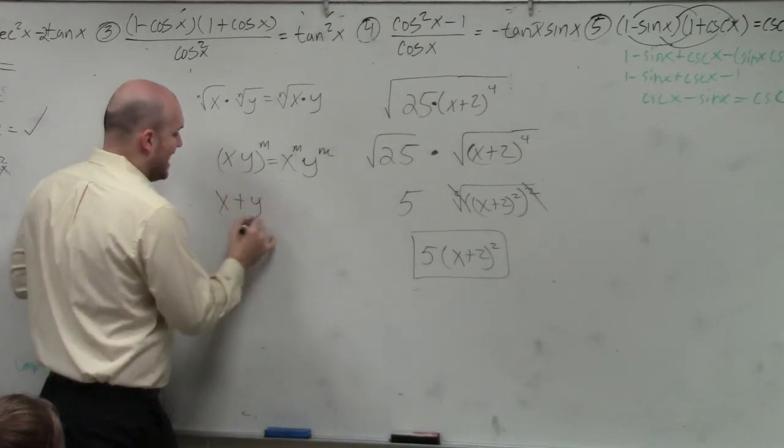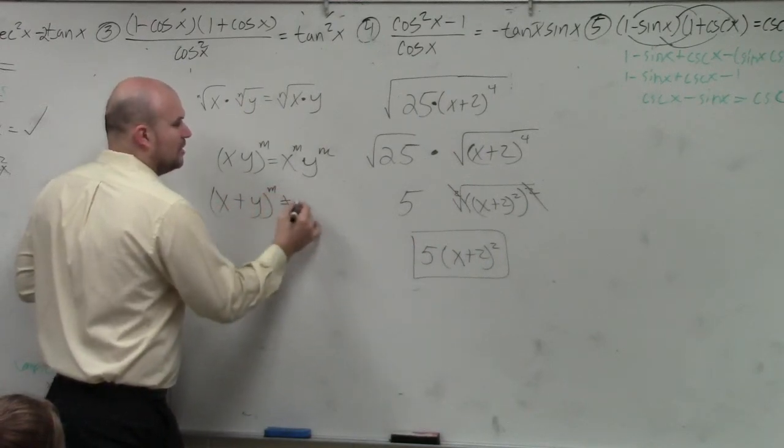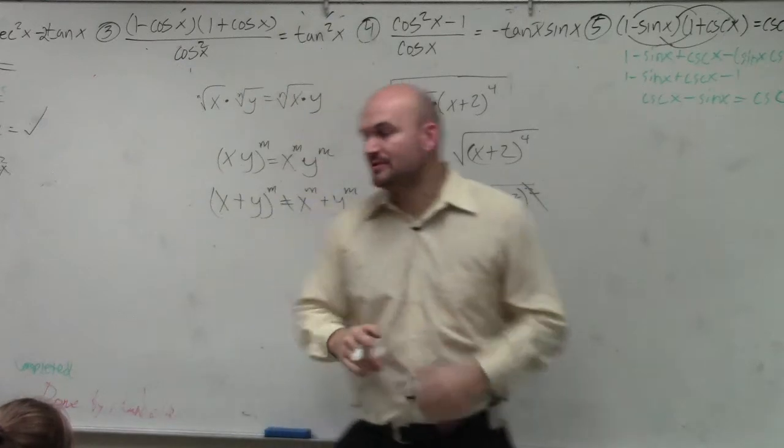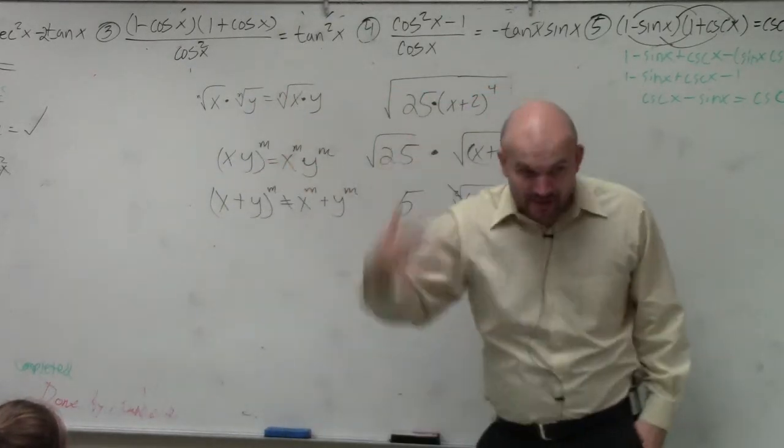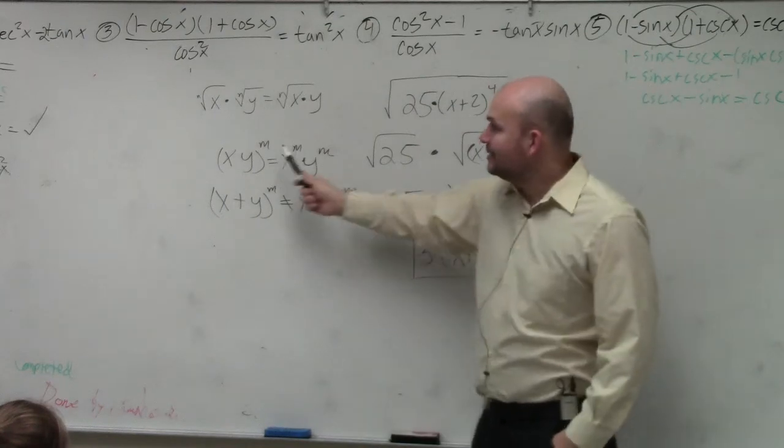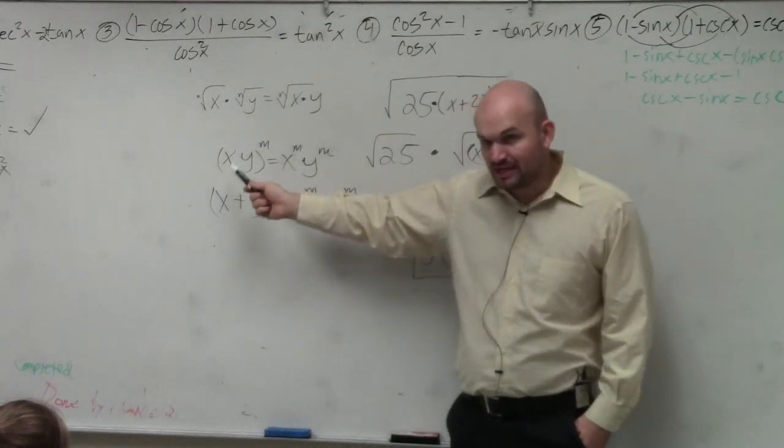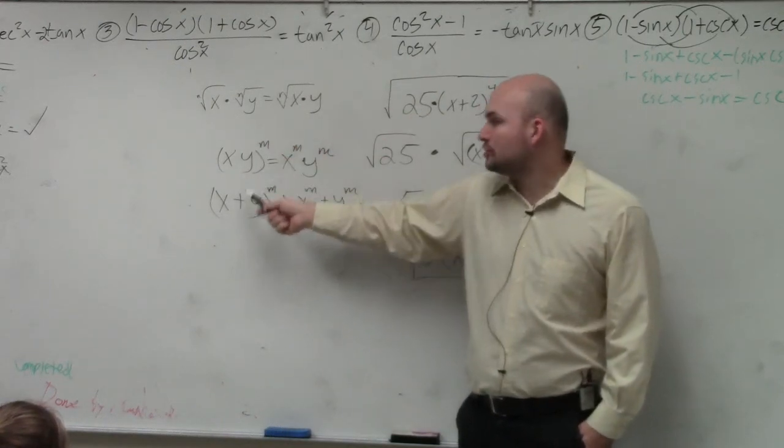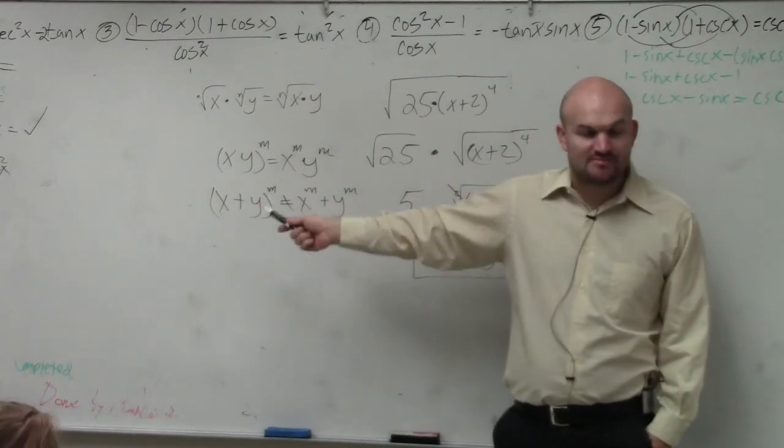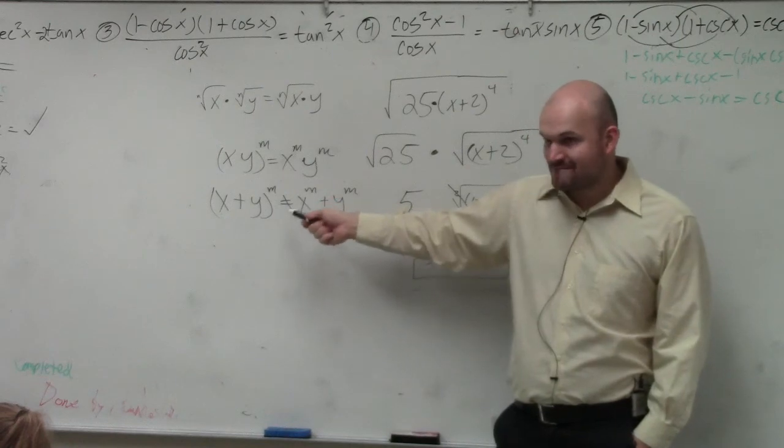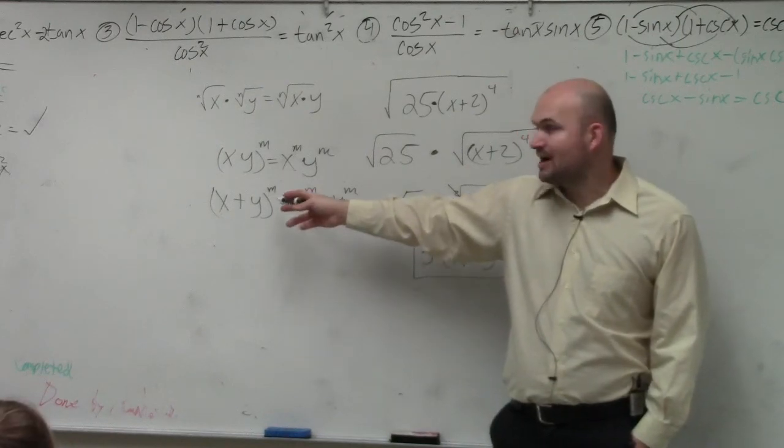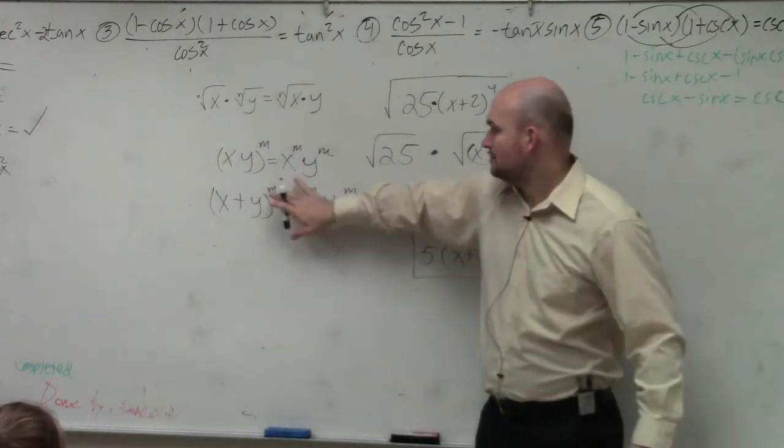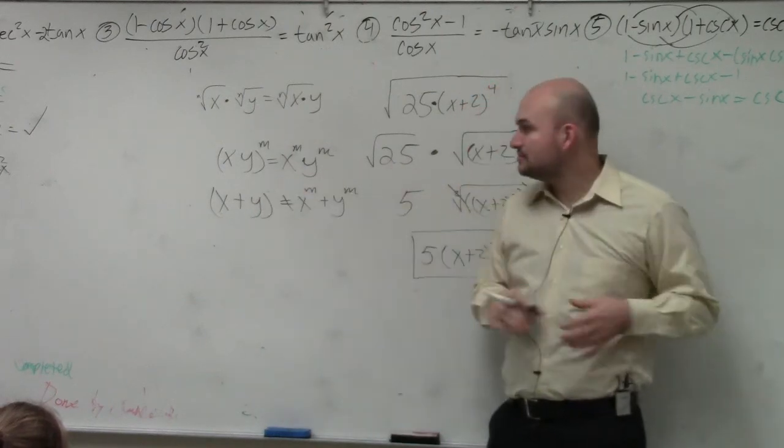That does not ever, ever work when you have your terms separated by addition or subtraction. So it's OK. I'm just going to make sure. I'm just reiterating this because it is such a common mistake. You can distribute a power across multiplication or division. You cannot distribute a power across addition or subtraction. This does not work, ever. What do you do when it's x plus y to the m power? You'd multiply it by itself that many m times, right? Yes? If this was squared, you'd multiply it by itself squared and so forth? OK.